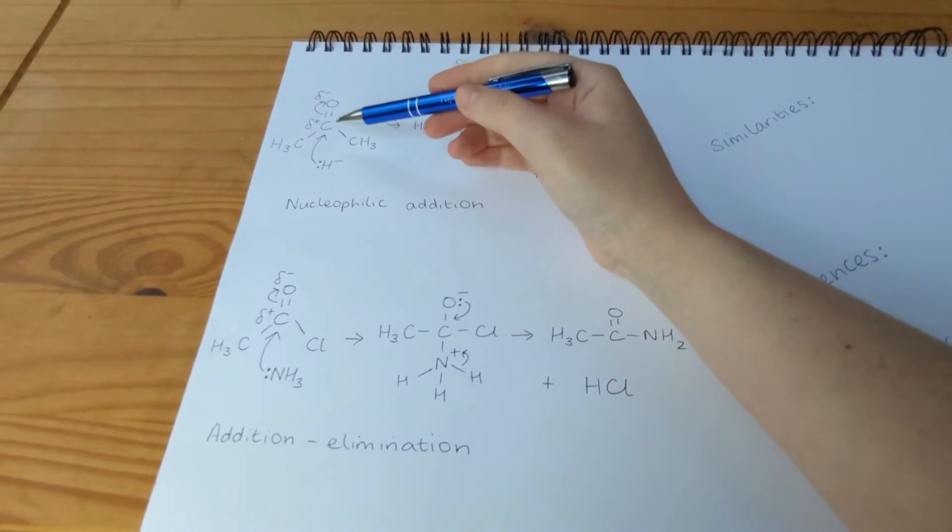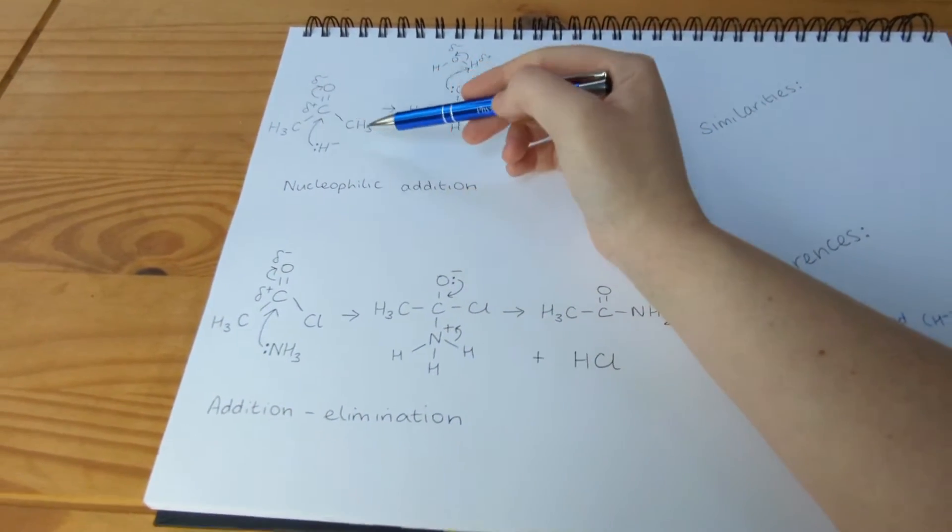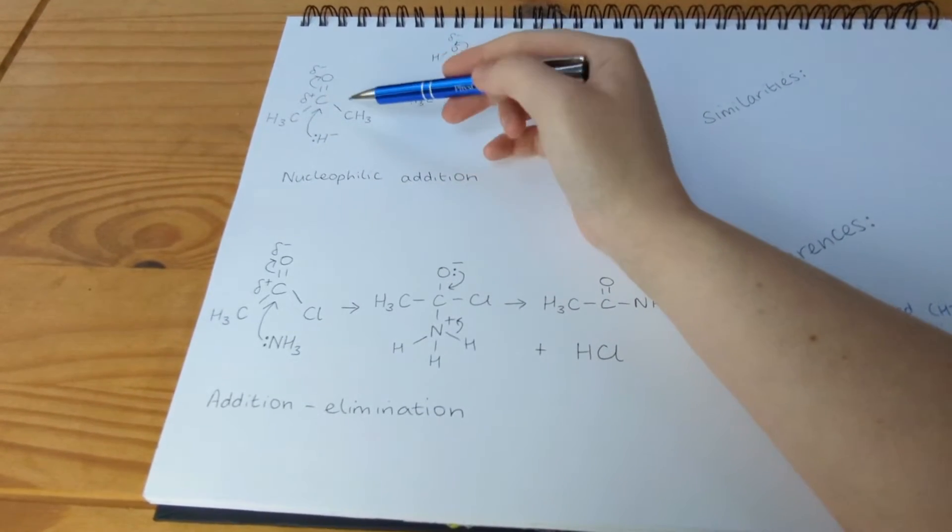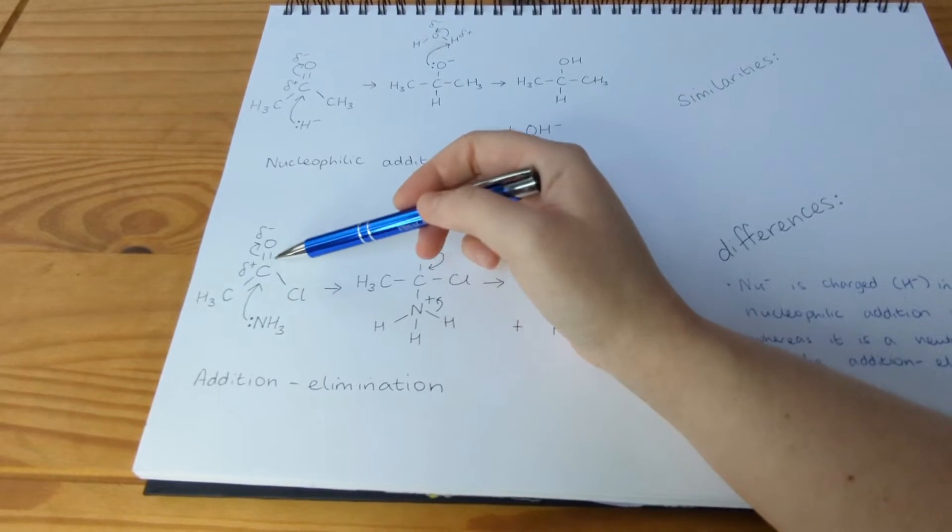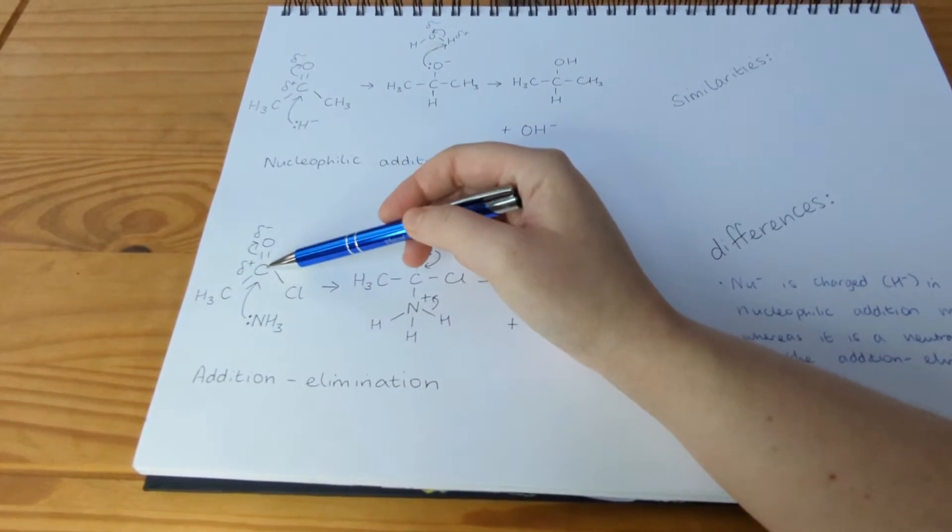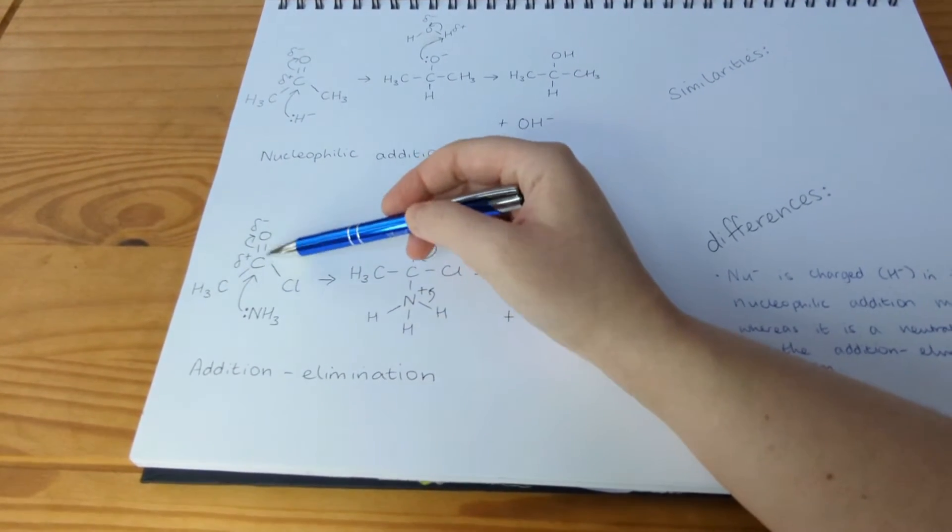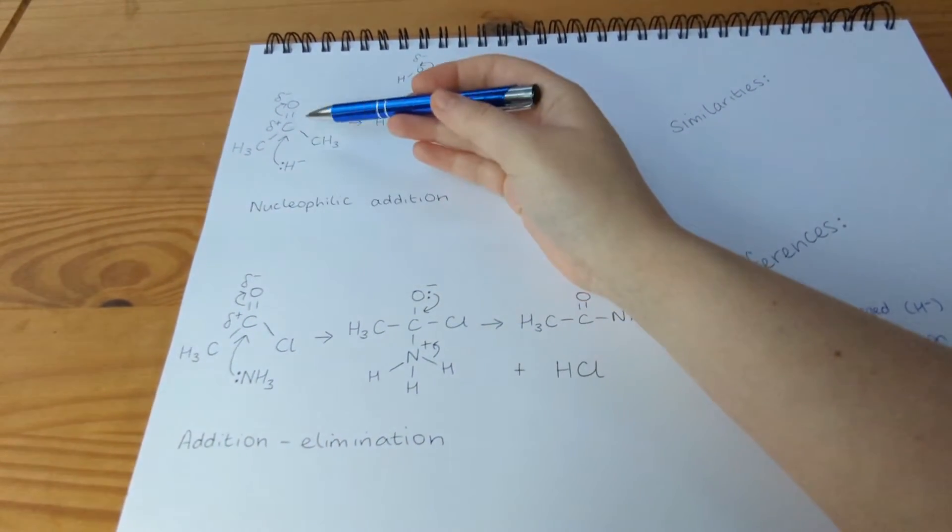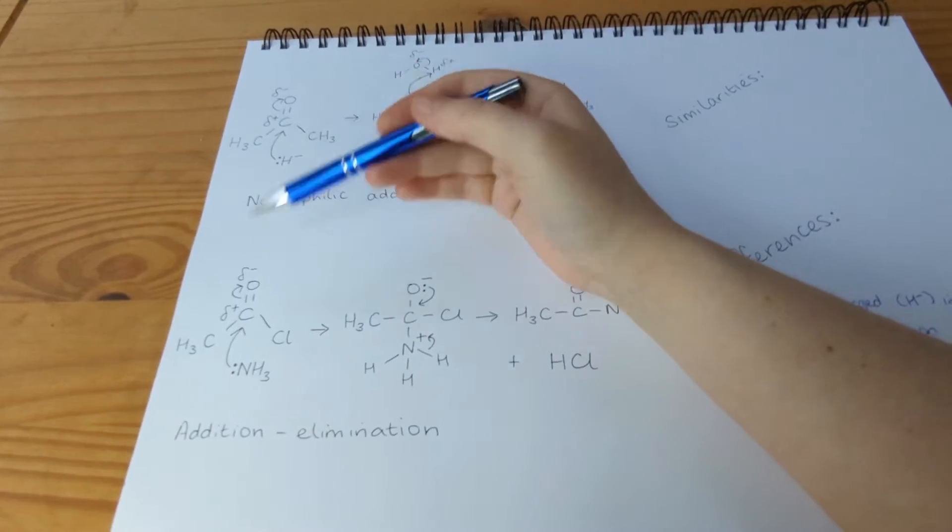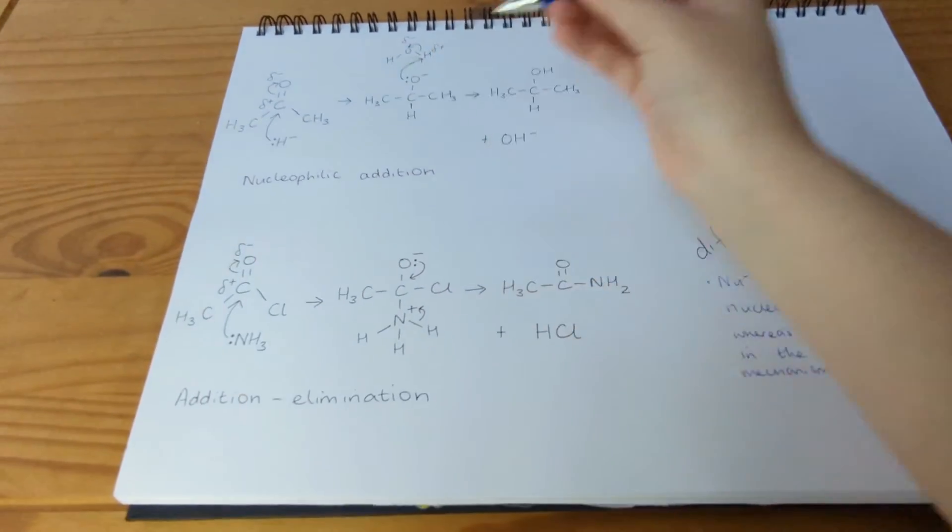And in this reaction, the electrophile is this molecule here, which is propanone, it's a ketone. Whereas in this one, the electrophile is this acid chloride, ethanol chloride. And we could say a similarity is the electrophiles in both contain a carbonyl functional group.